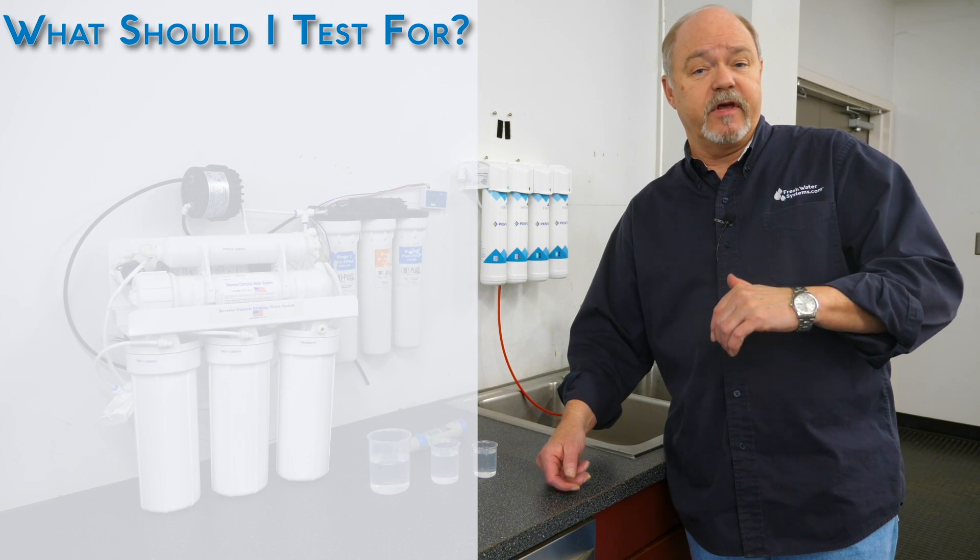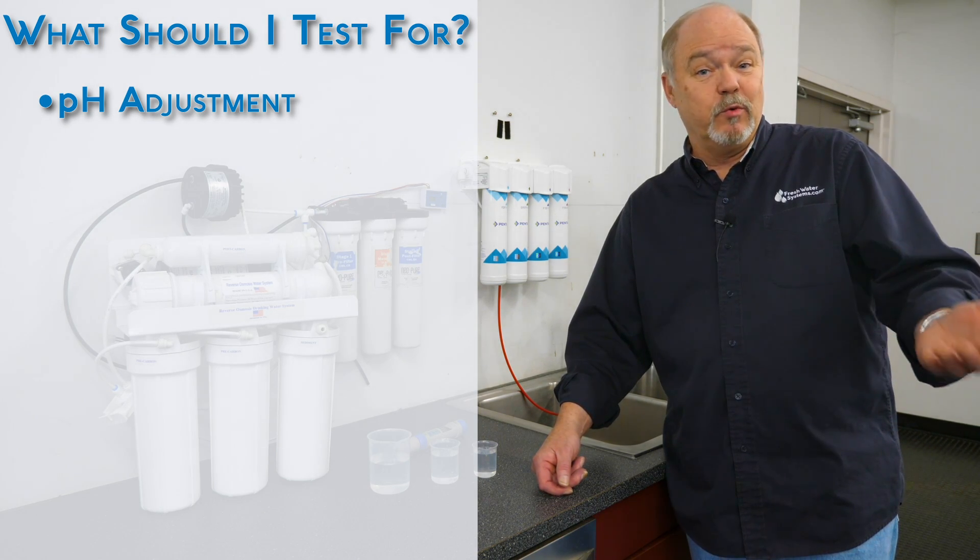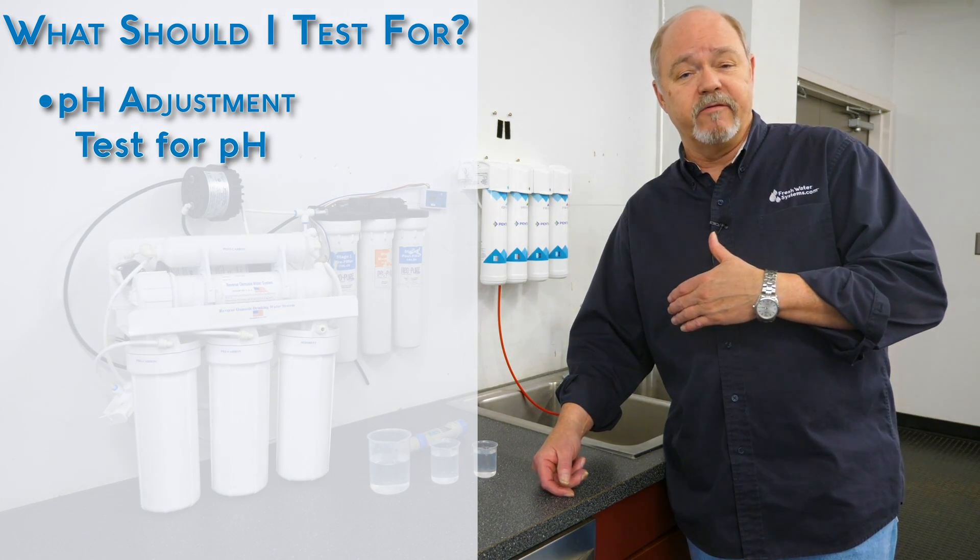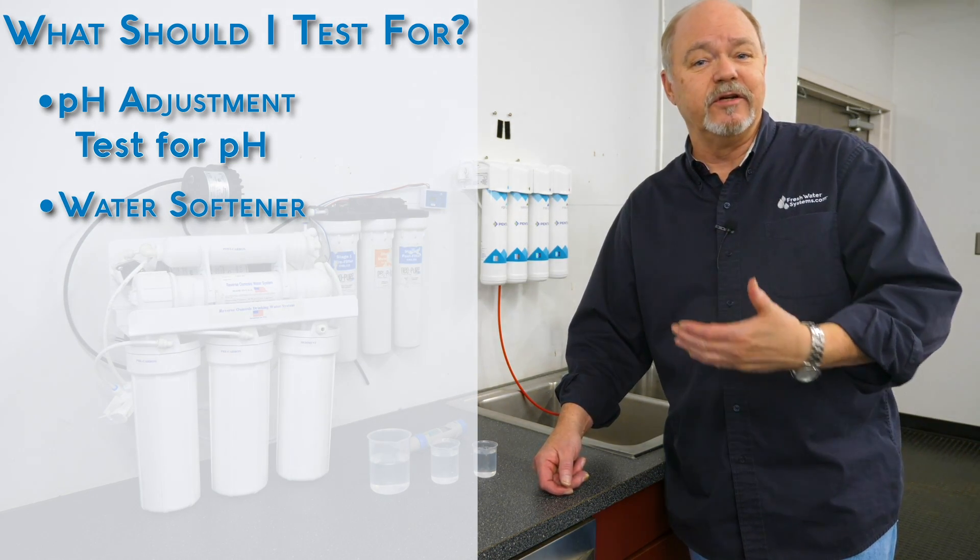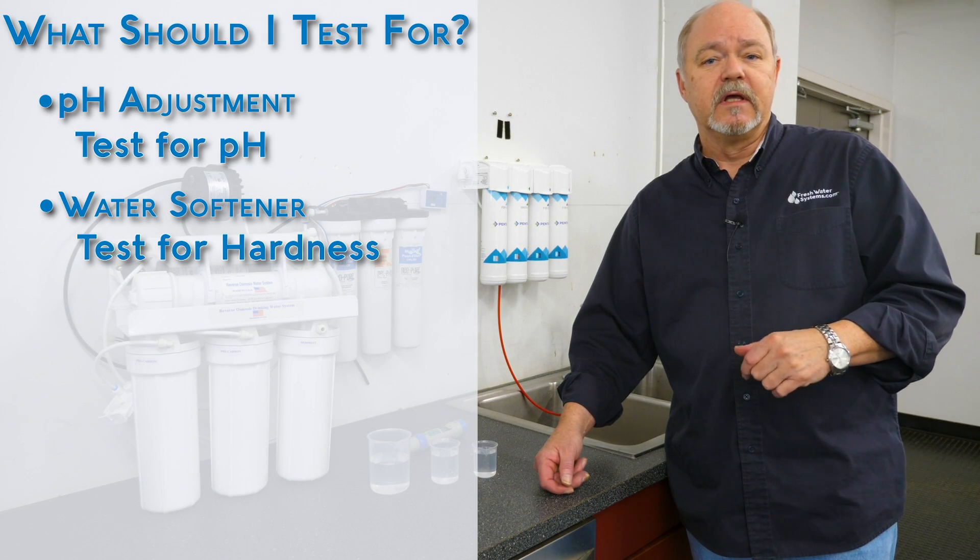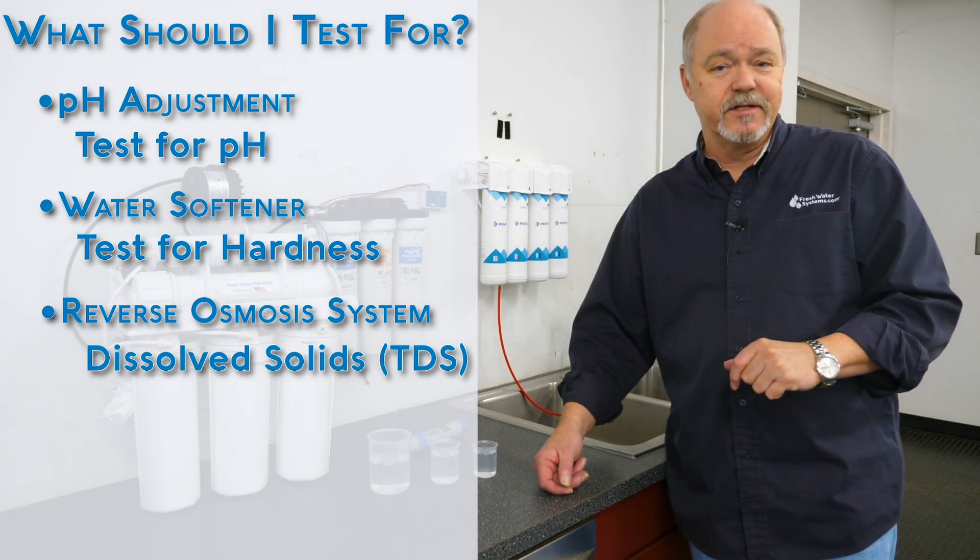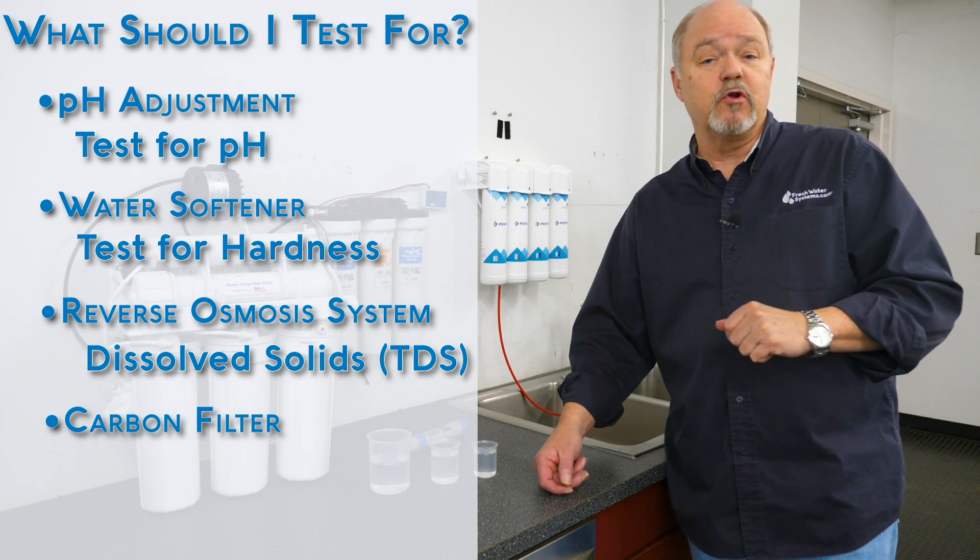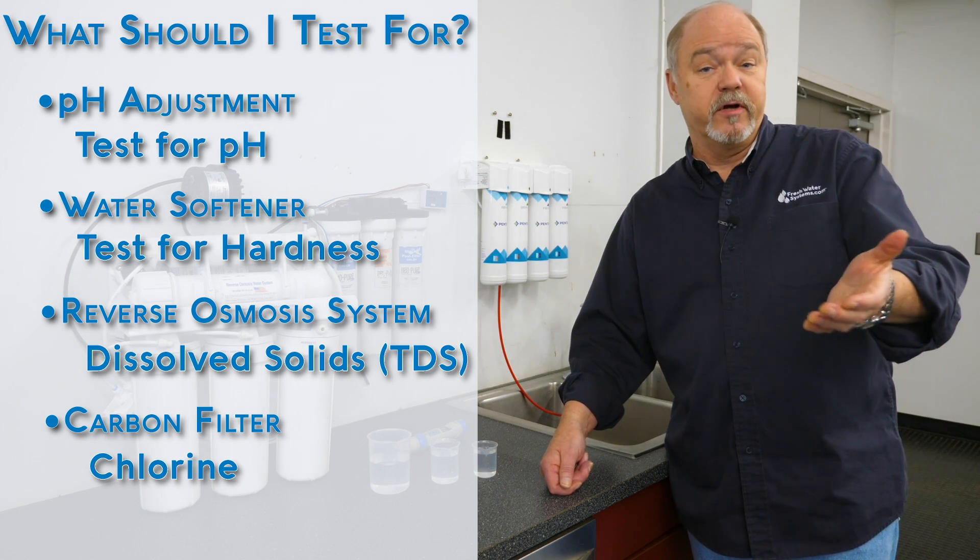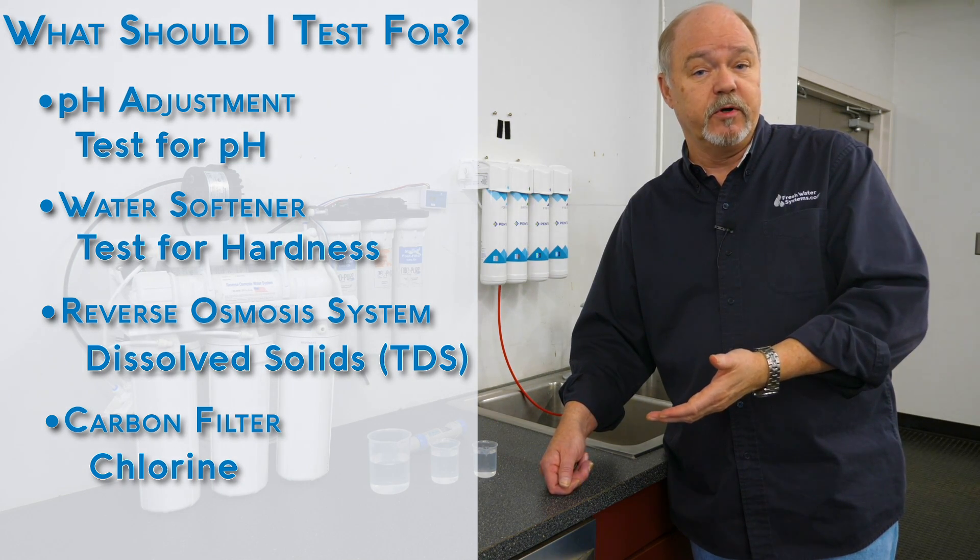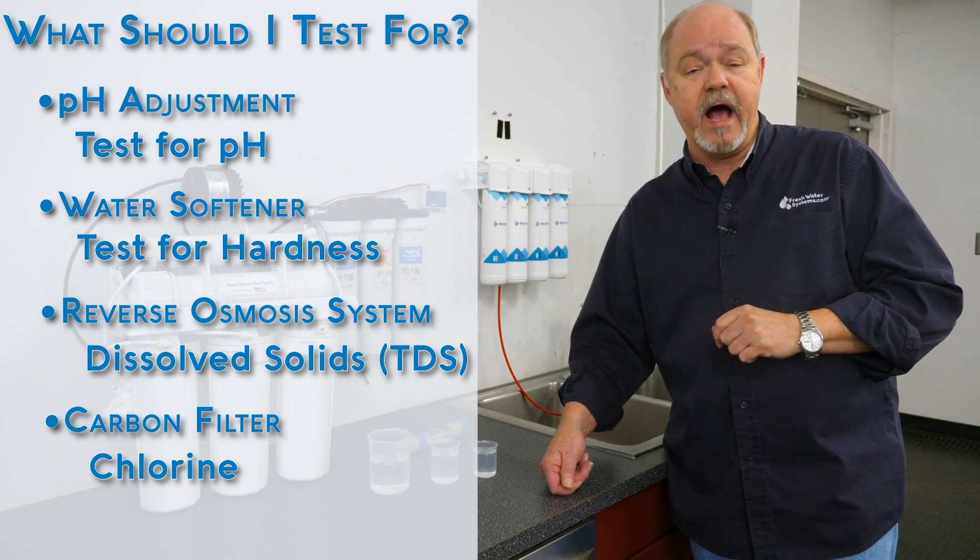So if you have a pH adjustment system because your water is slightly acidic well then you want to test for pH. If you have a water softener to take hardness out of the water obviously you want to test for hardness. So a reverse osmosis system you want to test for dissolved solids. A carbon filter you could test for chlorine breakthrough on a carbon on city water that's chlorinated. Now there is some carbon that has lead reduction capabilities that you can test for and that's a great idea if you're concerned about lead in your house.